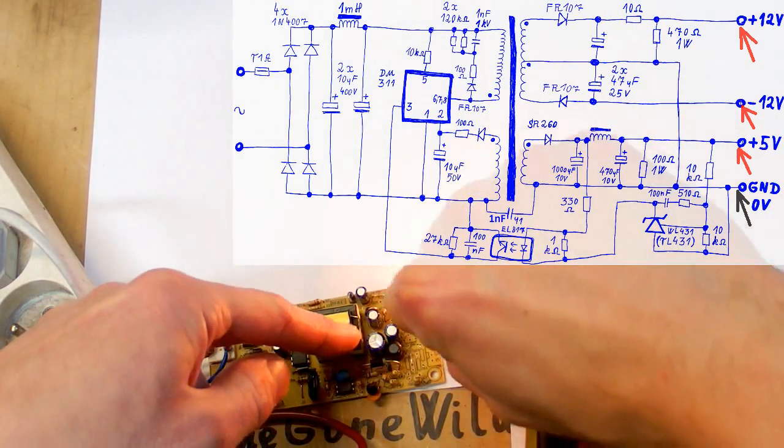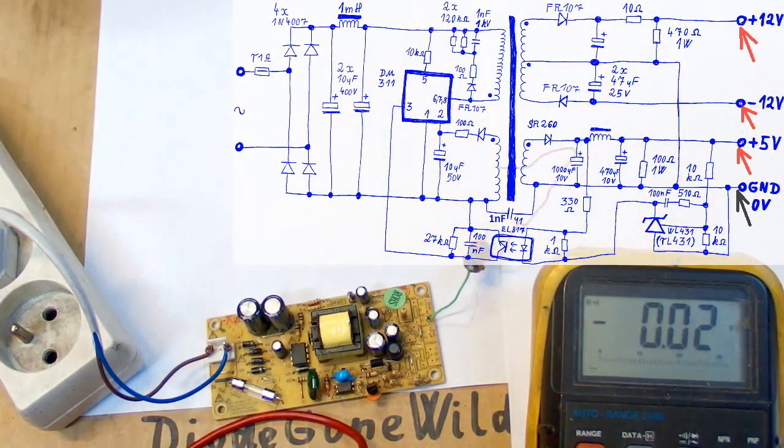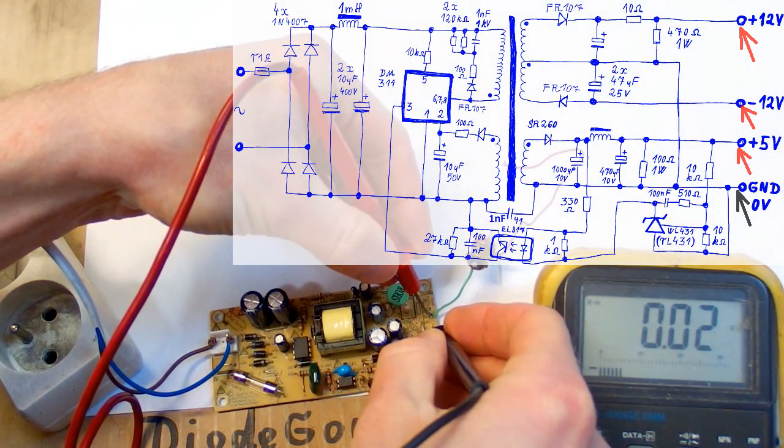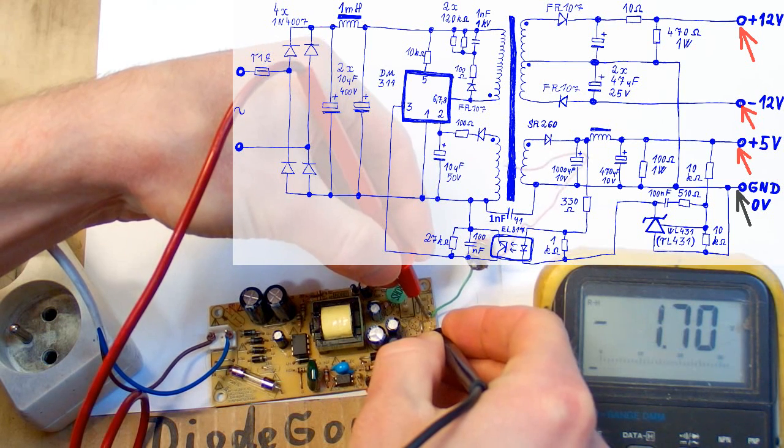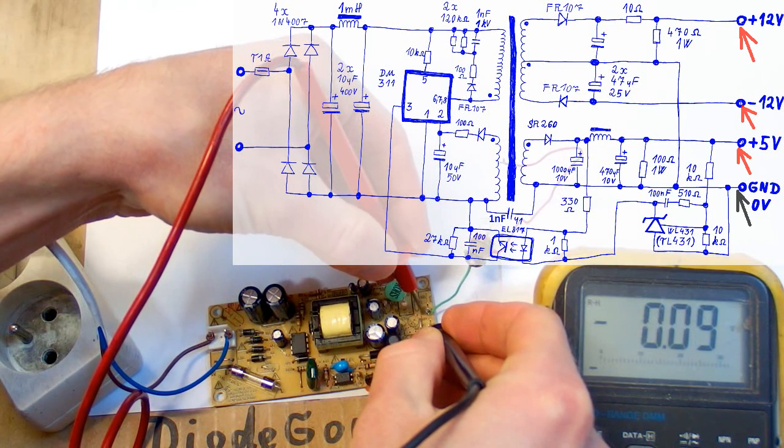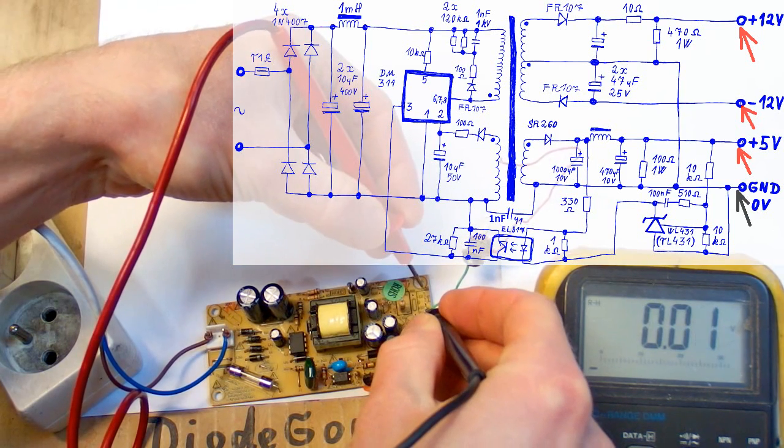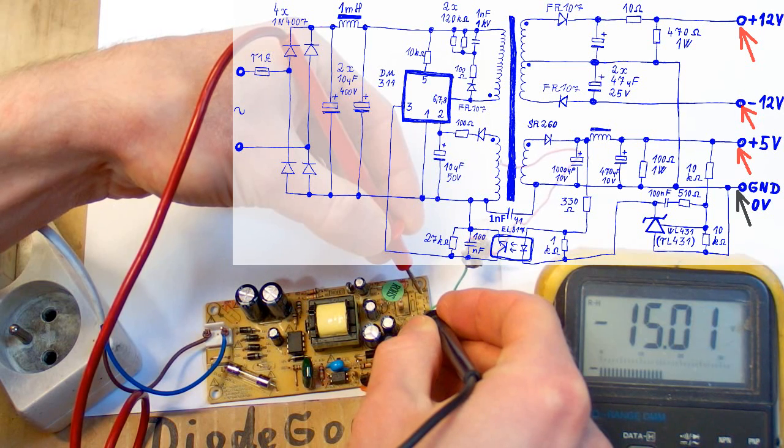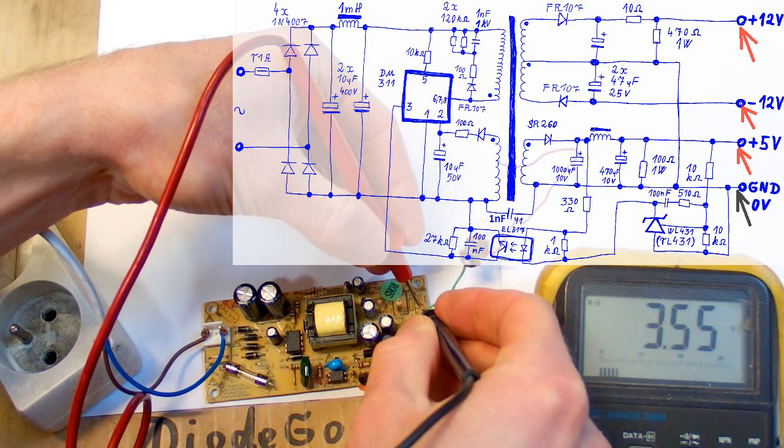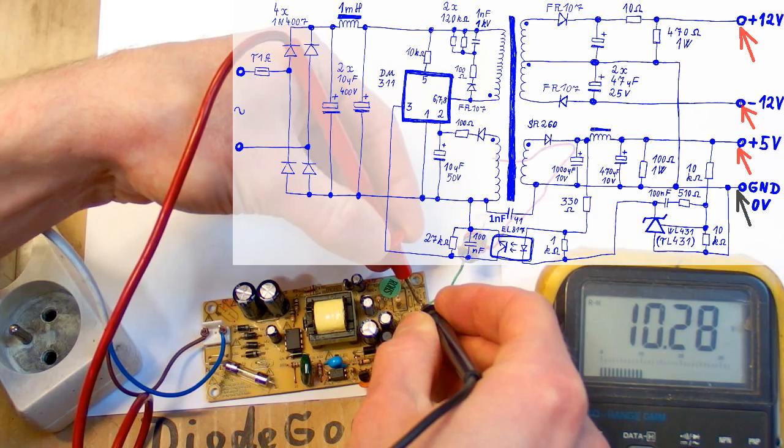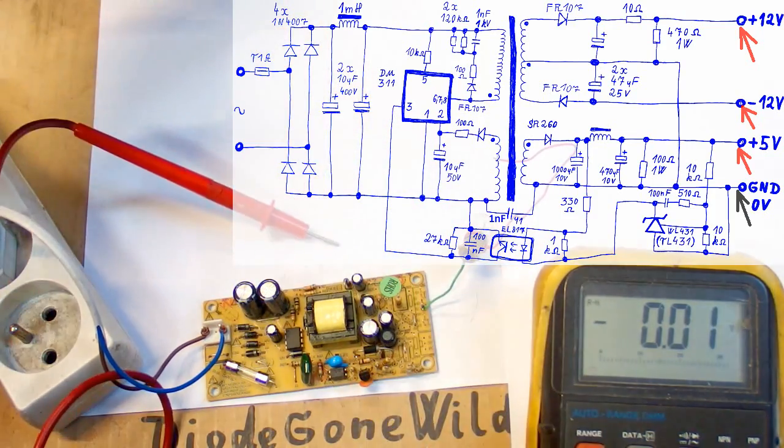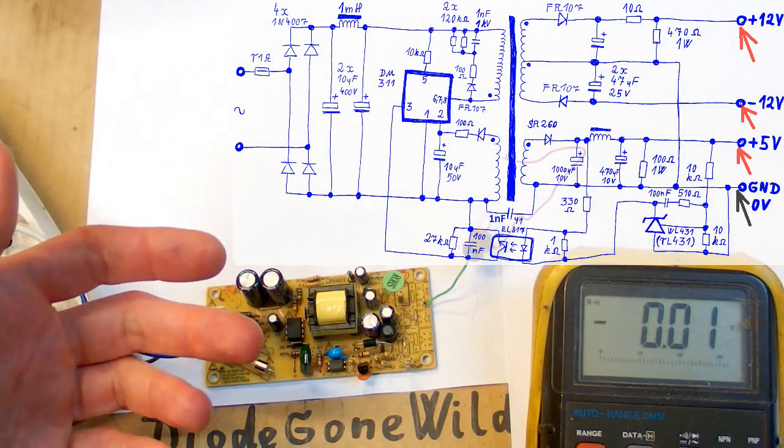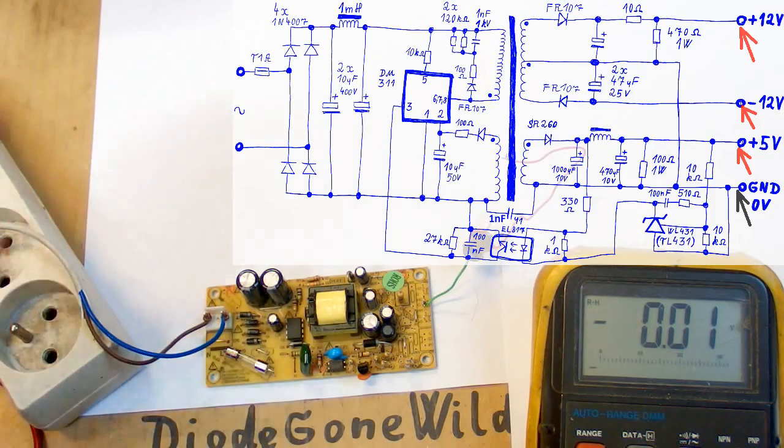Now let's try to measure it without any load. Is it going to change? The 5 volts should be still the same because it's regulated. Yes, it's almost the same, 5.03, and the other ones are 15.1. It has changed a bit. And the other one 10.2, so it's very inaccurate. So as you can see the output with the voltage sensing on it is very accurate and the other outputs are just flying up and down.